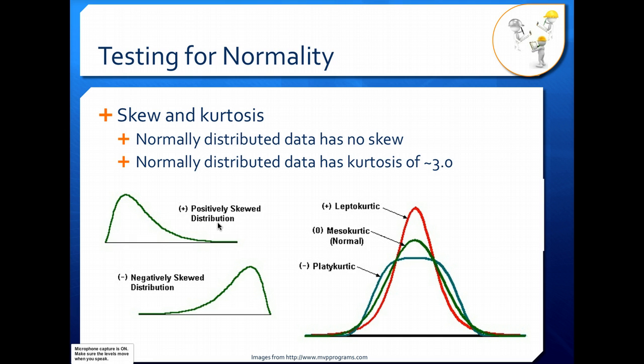Skew was mentioned for that previous example. In the histogram that was not normal, it had a positive skew. When you have positive skew, you have a tail to the right. When you have negative skew, you have a tail to the left. Normally distributed data has no skew — it's symmetrical and doesn't have a tail like that.